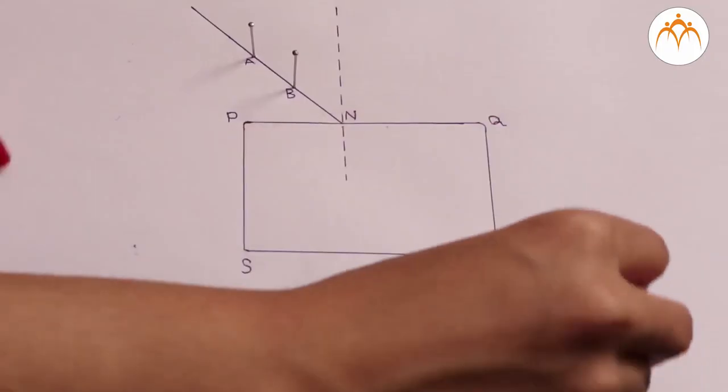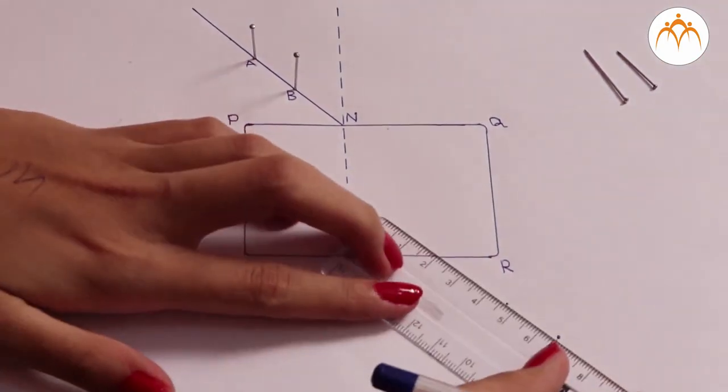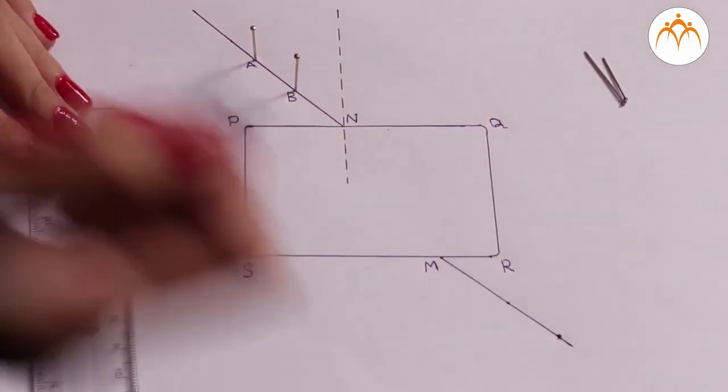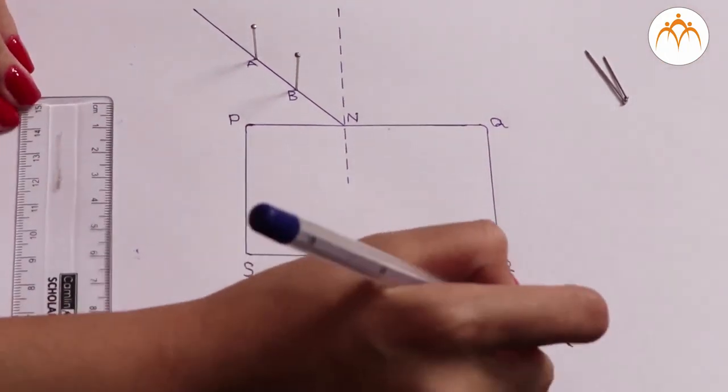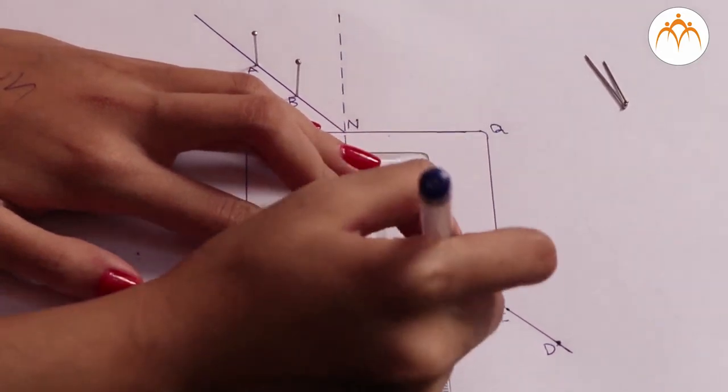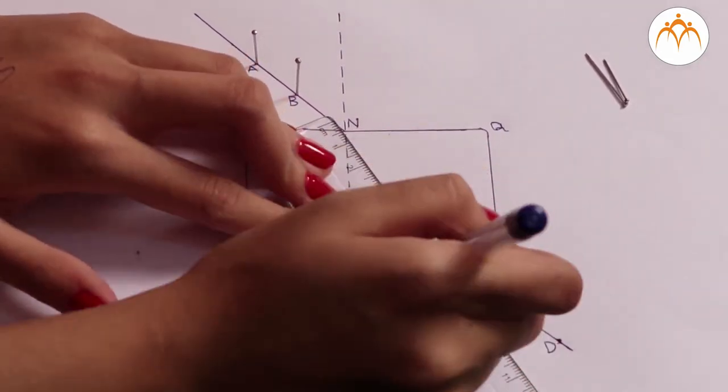Look at the pins A and B from the opposite side of the slab and pierce pins C and D vertically, so that the images of A and B are in line with the pins C and D. Now remove the slab and the pins and draw a straight line going through the points C and D so that it intersects SR at point M. Join points M and N.